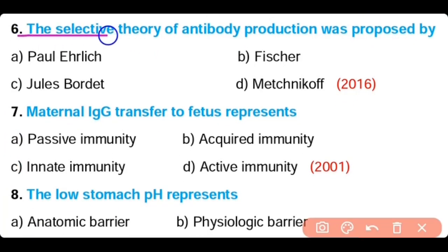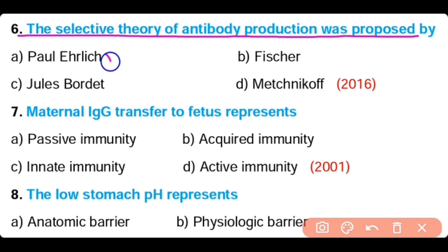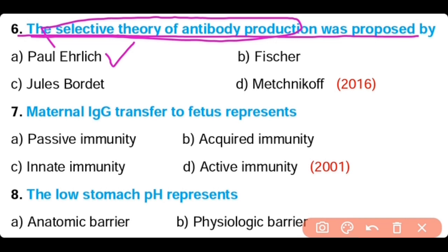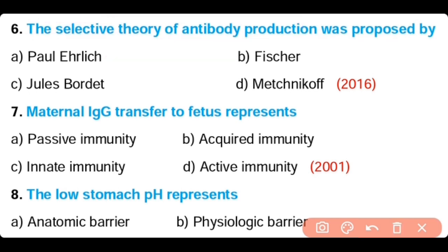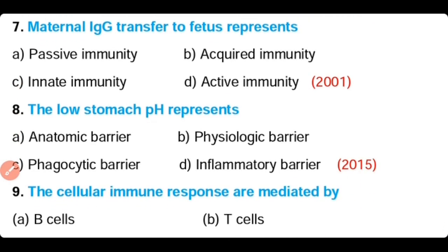Question number 6. The selective theory of antibody production was proposed by: Paul Ehrlich, Fischer, Jules Bordet, or Metschenkoff. The correct answer is Option A. The selective theory of antibody production was proposed by Paul Ehrlich. According to this theory, it is not the antigen but the antibody molecule that plays a central role in determining its specificity.